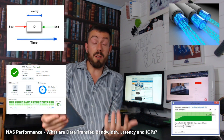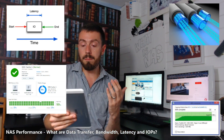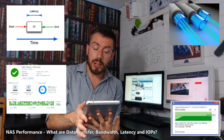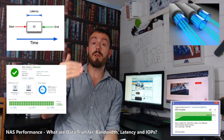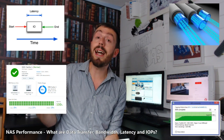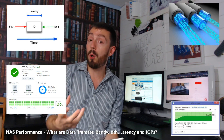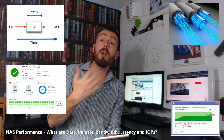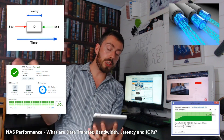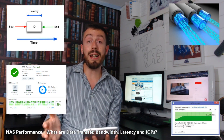A simple simile: think of being on a motorway. The data transfer is the sheer number of cars that you have sent from one end of the motorway to the other. That is the data transfer — the weight, and therefore the speed at which those cars have covered the distance as well — which leads us neatly into bandwidth.